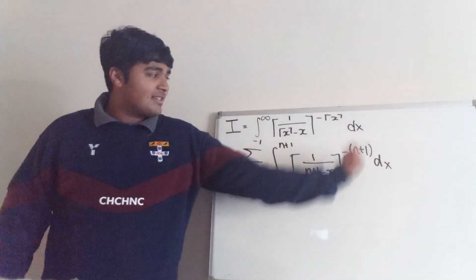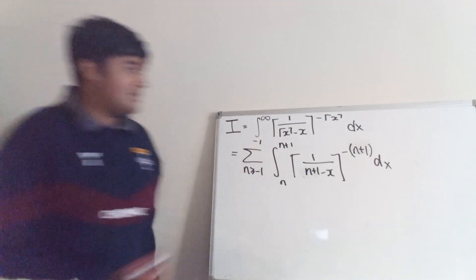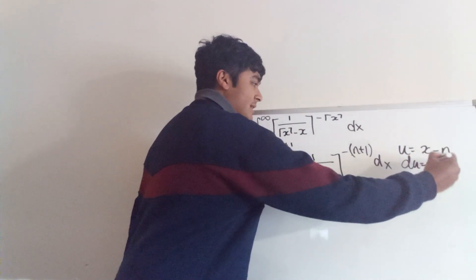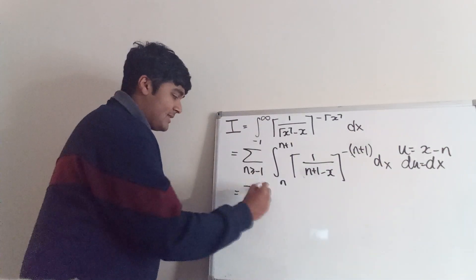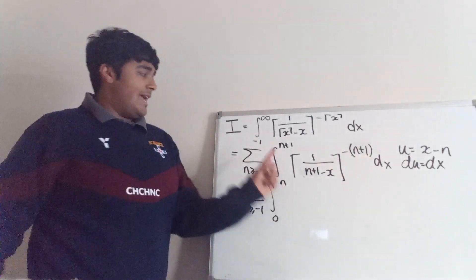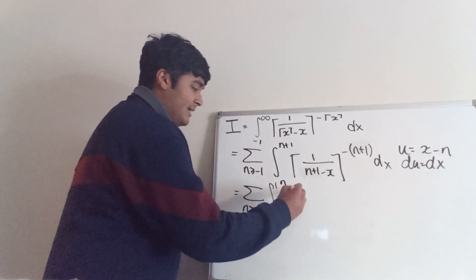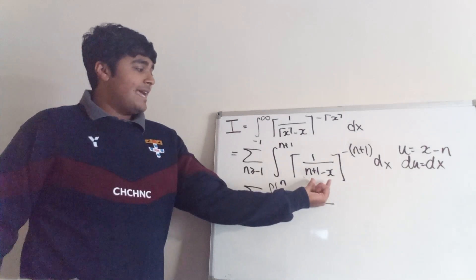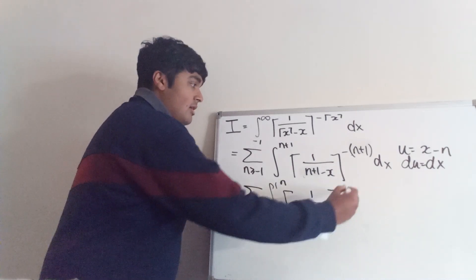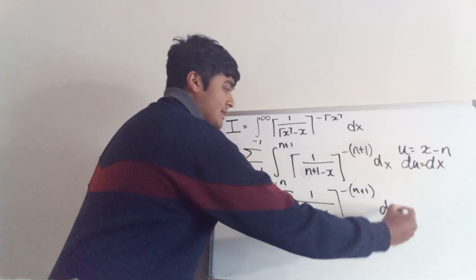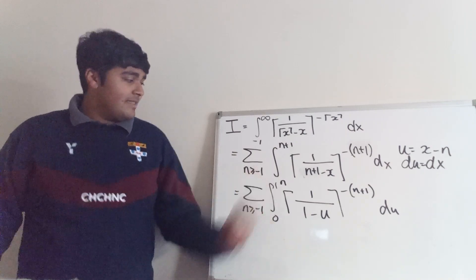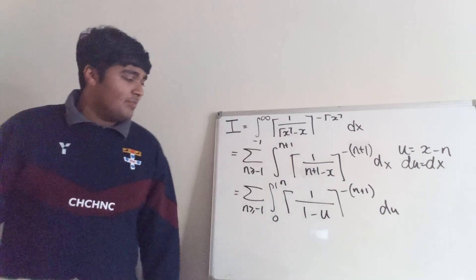We've removed two of the ceiling functions, but we've still got another ceiling function to deal with. What we want to do is simplify this integral by doing a u-substitution: u equals x minus n, so du equals dx. When x is n, u is 0, and when x is n plus 1, u is 1. So this becomes the sum from n equals minus 1 to infinity of the integral from 0 to 1 of the ceiling of 1 over 1 minus u, raised to the power of minus n plus 1, du. We've gotten rid of the n's from the limits of the integral.